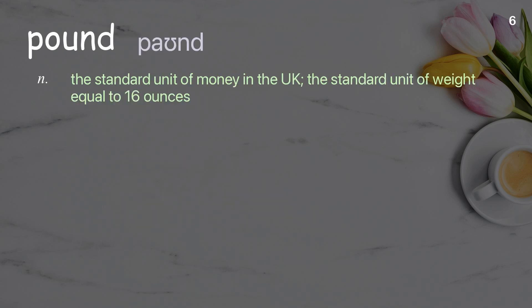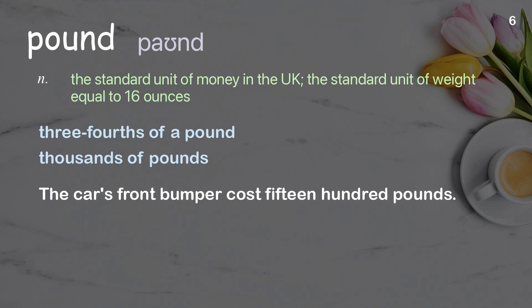Pound: the standard unit of money in the UK; the standard unit of weight equal to 16 ounces. Examples: three-fourths of a pound, thousands of pounds. The car's front bumper cost 1,500 pounds.